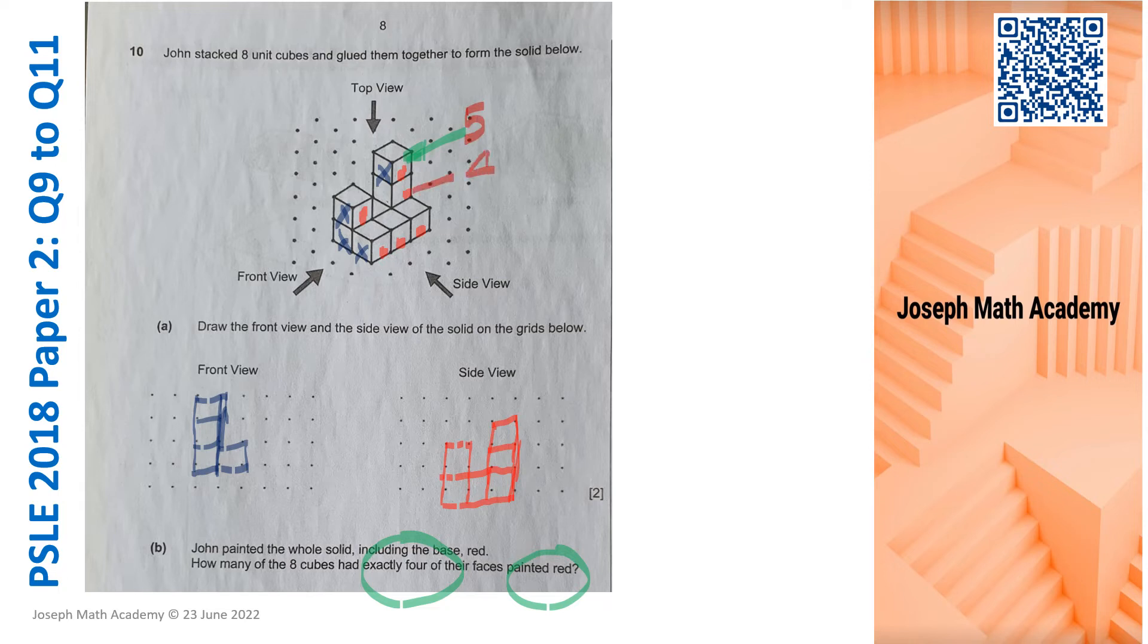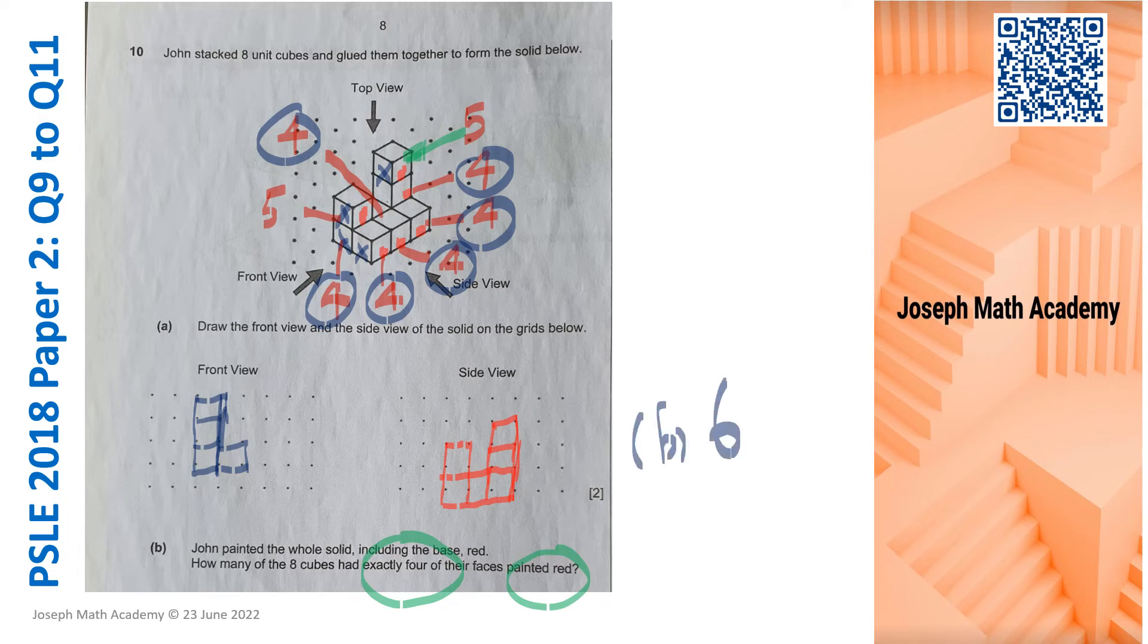So let's take a look. Now, this top cube over here, there are five painted faces. So there should be five painted faces here. This one here, four. This one here, four. Followed by four. This is also four. This is four. This is five. And there's one more hidden here. This is four. And we want to know the four faces that are painted red. So let's circle them. One, two, three, four, five, six. And part B answer, there should be six. Six cubes with four faces painted red. Number 10 is done.